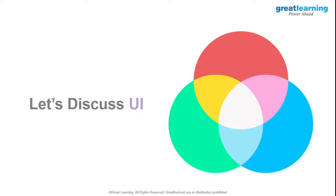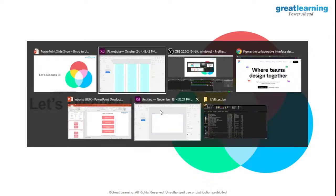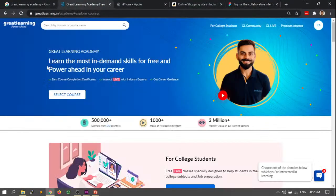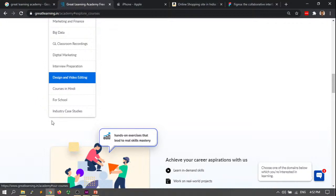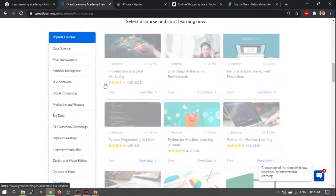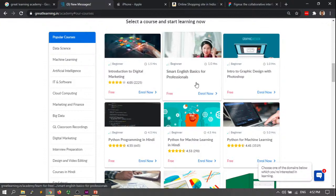Someone has used only Figma till date and can't say which is best among the tools. Uday says it's Figma — so it really depends. Durga Prasad is asking to make a course on learning English from scratch to advanced. You should definitely check out Great Learning Academy — we have free courses on English. If you check popular courses, we have 'Smart English Basics for Professionals' and more English courses coming up, available at greatlearning.in.